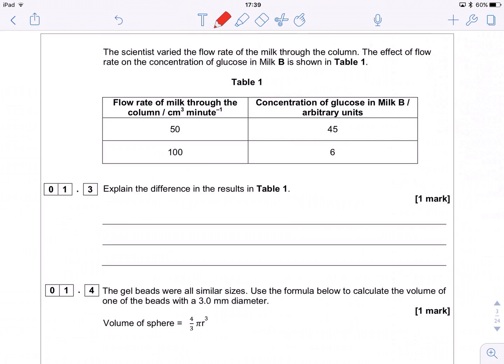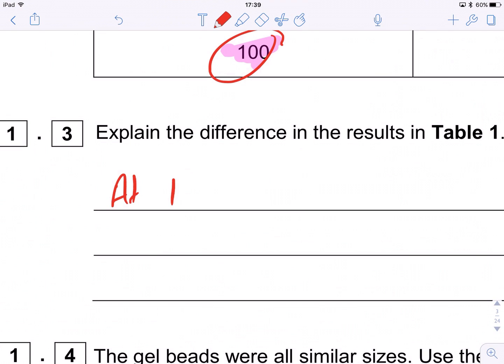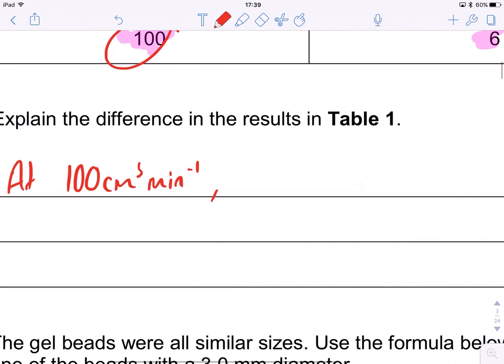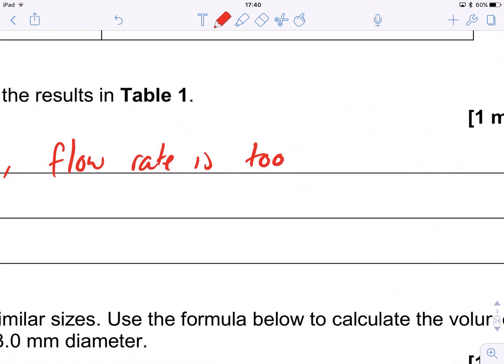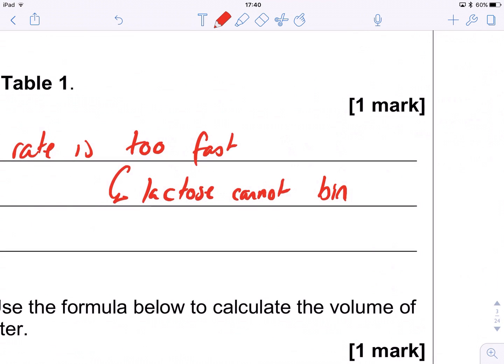Now we get into calculations and explaining data. So it says the scientist varied the flow rate. So that's how fast the milk goes through the column. And the effect of flow rate on the concentration of glucose in milk B is shown in table one. So slow flow rate, more glucose, fast flow rate, less glucose. Why is this the case? Well, basically, at 100 centimetres cubed per minute, flow rate is too fast. And that, we're going to explain that a little bit further. So that means that the substrate cannot bind to the active site. So lactose cannot bind to active site. So you're getting fewer enzyme substrate complexes formed. There we go. And again, nice. Not too bad, really.